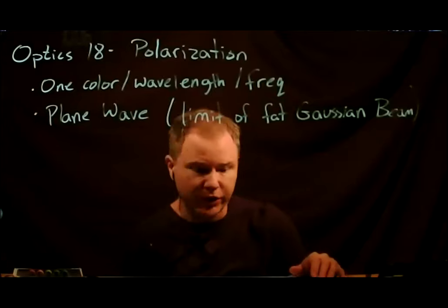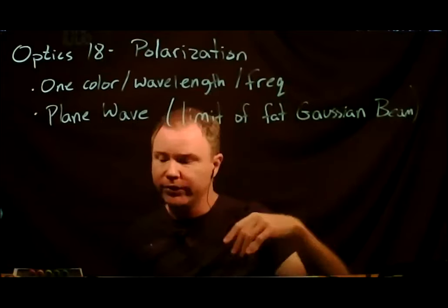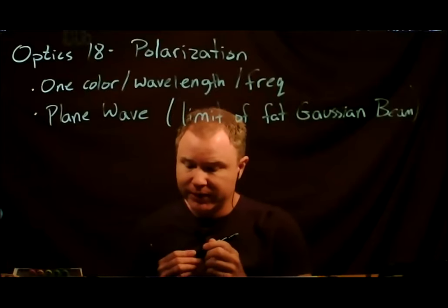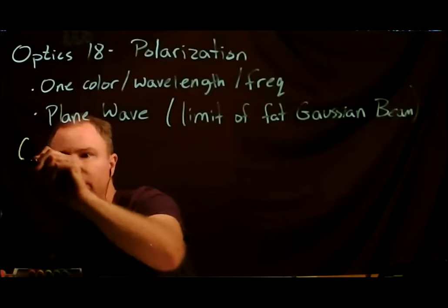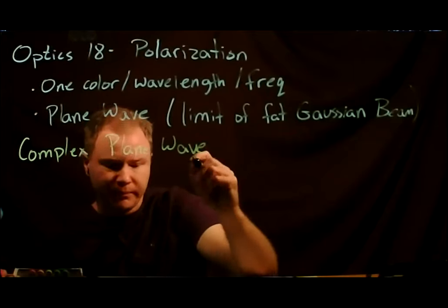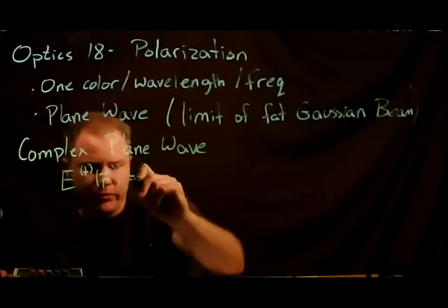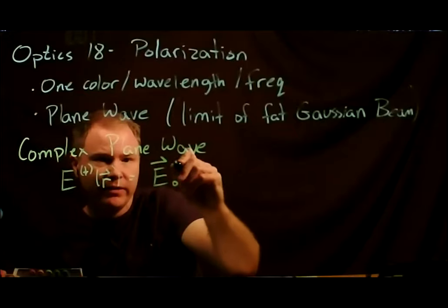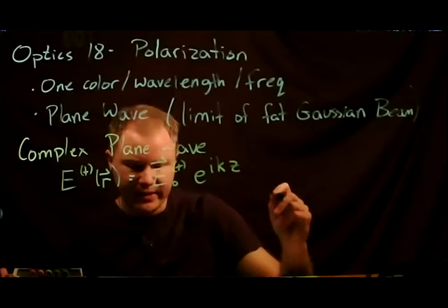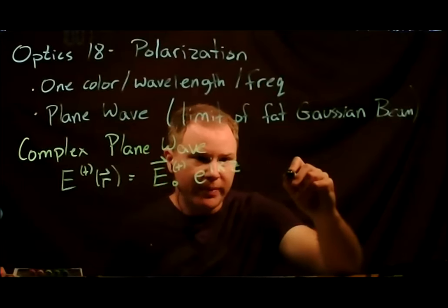With these two simplifications — single color and plane wave — we can start talking about the vector nature of light. Let's review what a complex plane wave looks like. A complex plane wave: we usually talk about this E-plus field of r, which is some constant in space E₀⁺ times e^{ikz}, where the wave is propagating in the z direction.